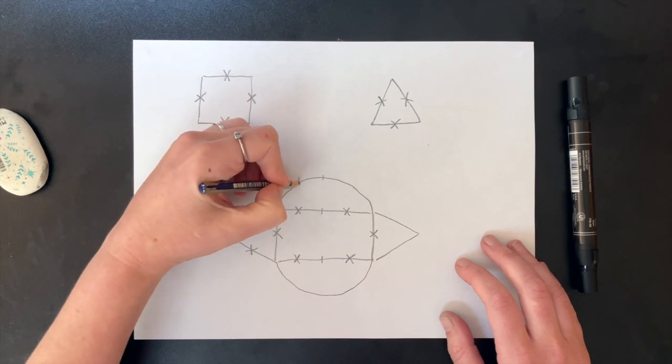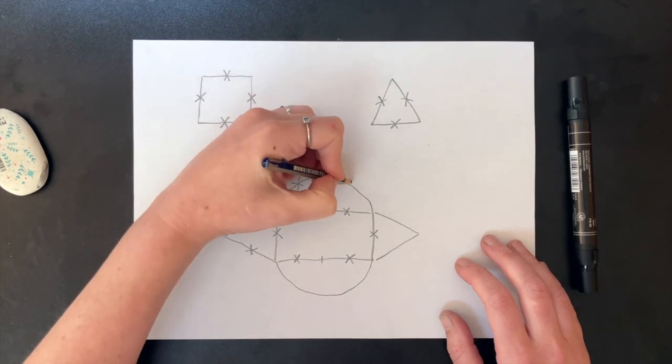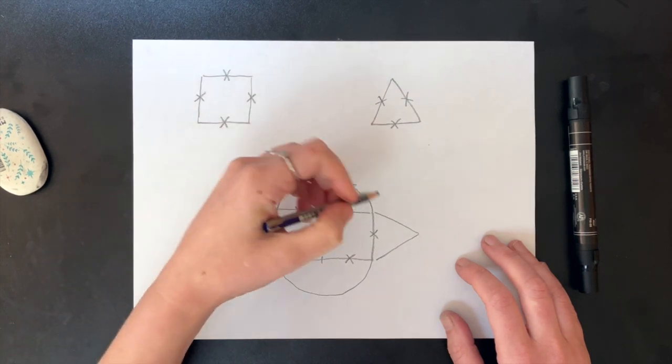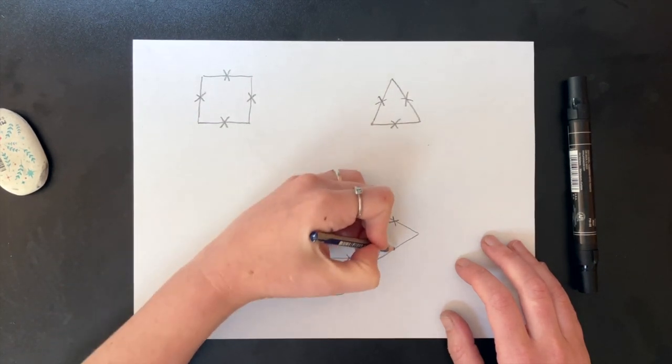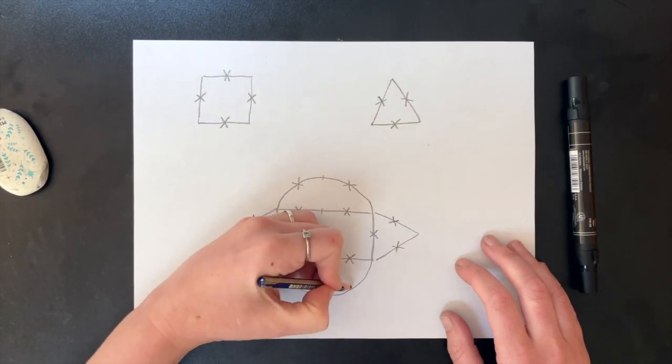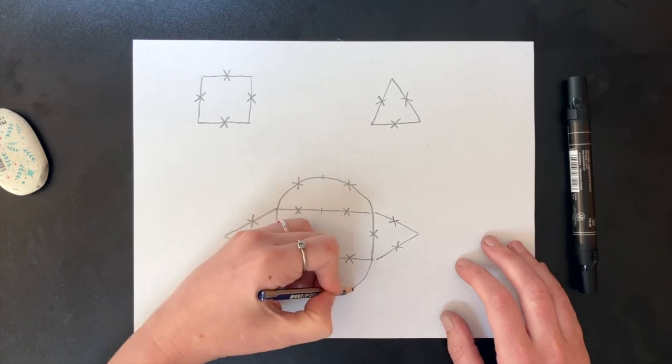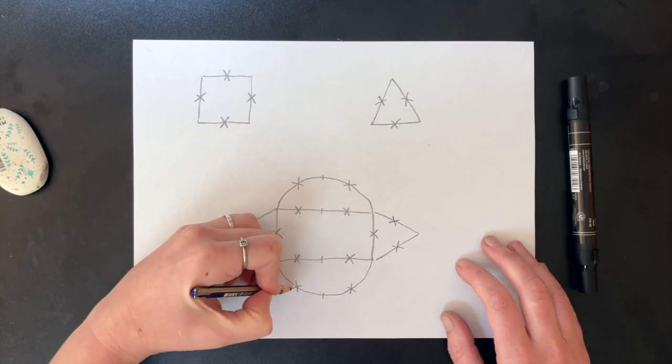Now, just like before, we are going to draw a pencil line for the shape of our knot. But we're going to use the X's we've drawn to guide where these lines go. Each X is going to be an intersection in our knot.